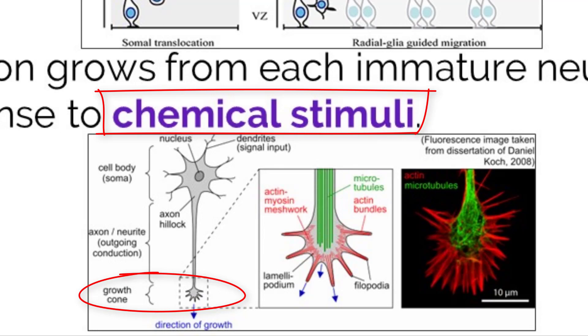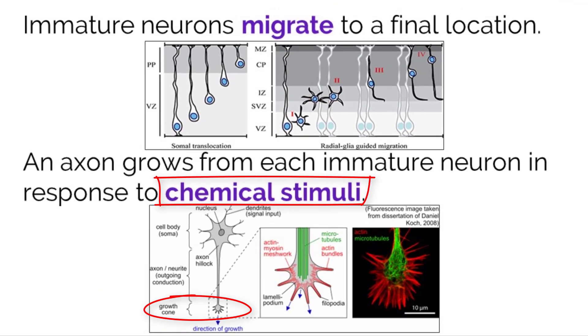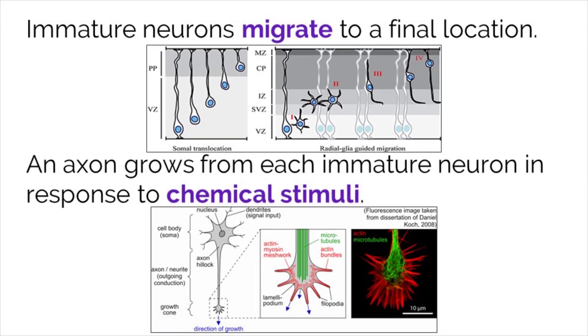This is important because some axons end up being very long. Without a chemical signal to lead its path, it is likely that the axon would never find the next neuron to connect to.